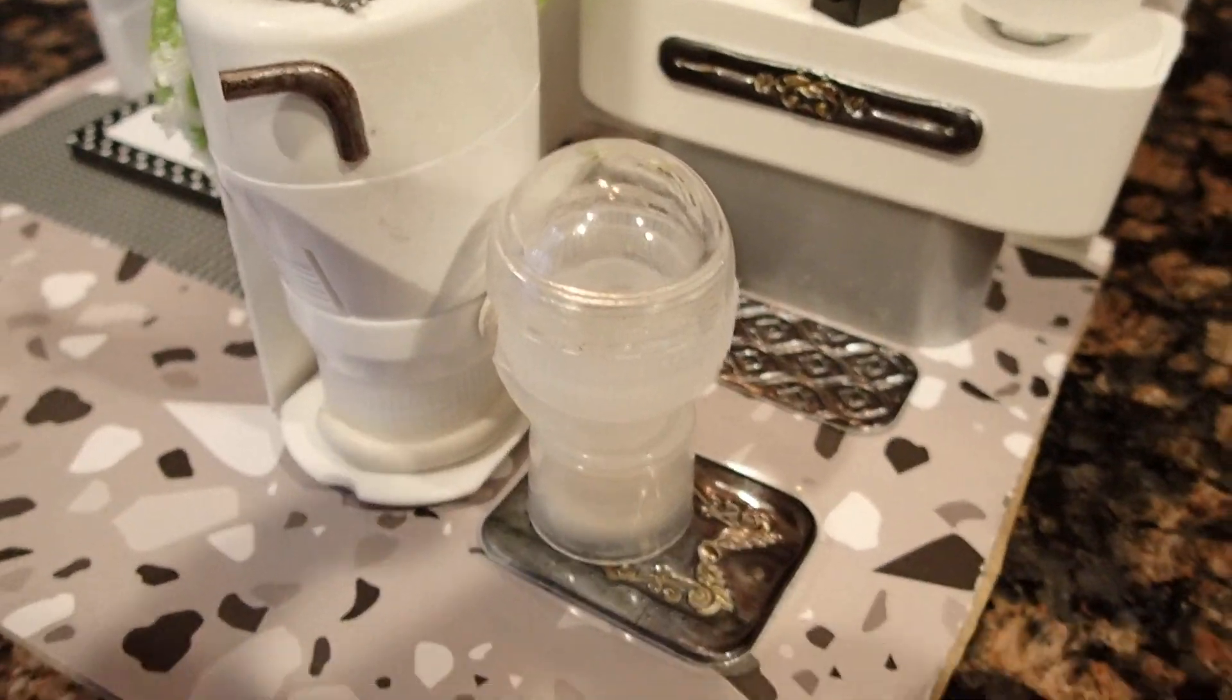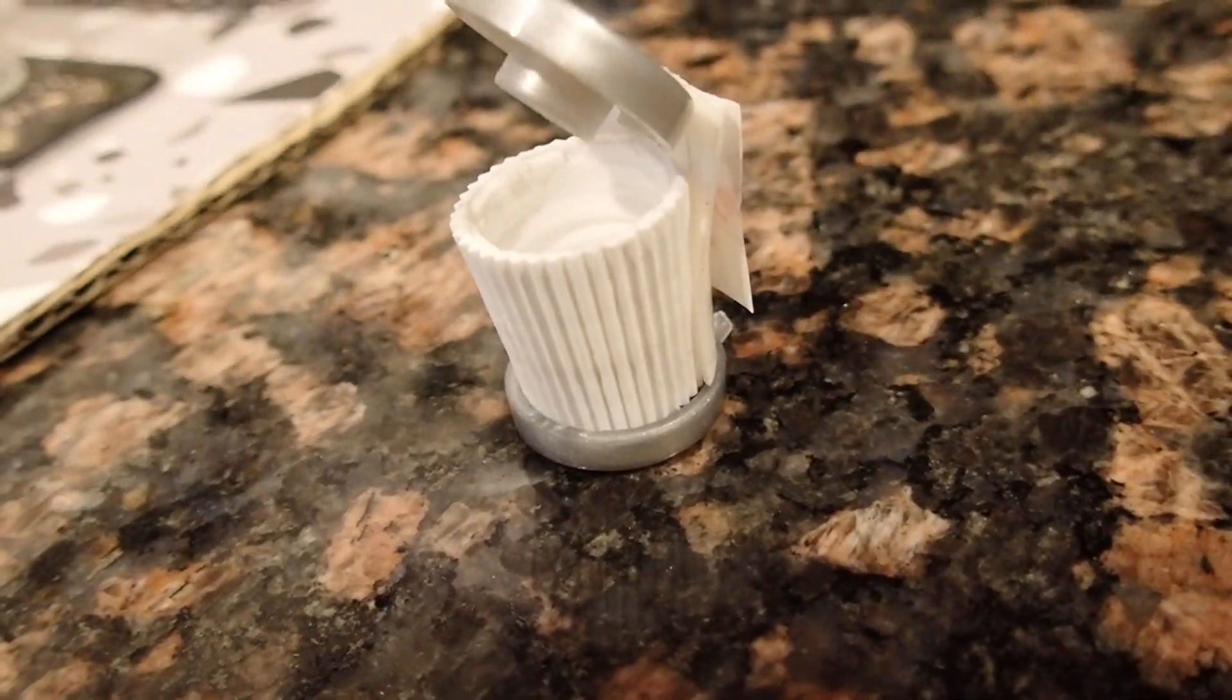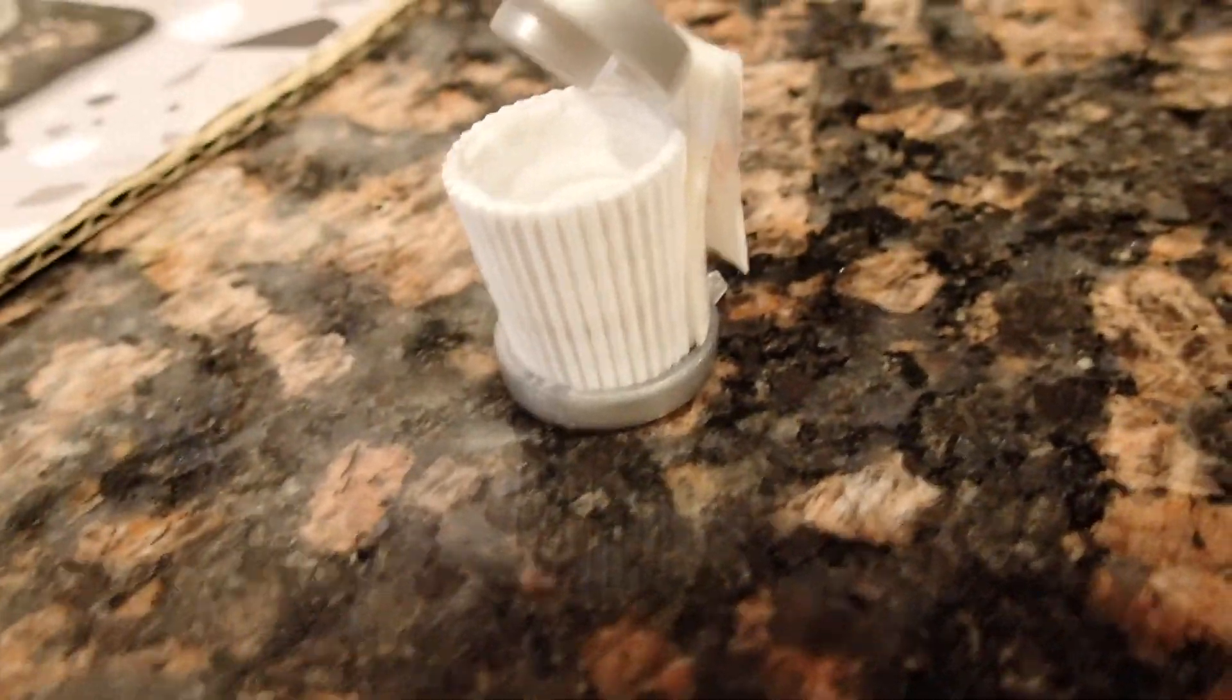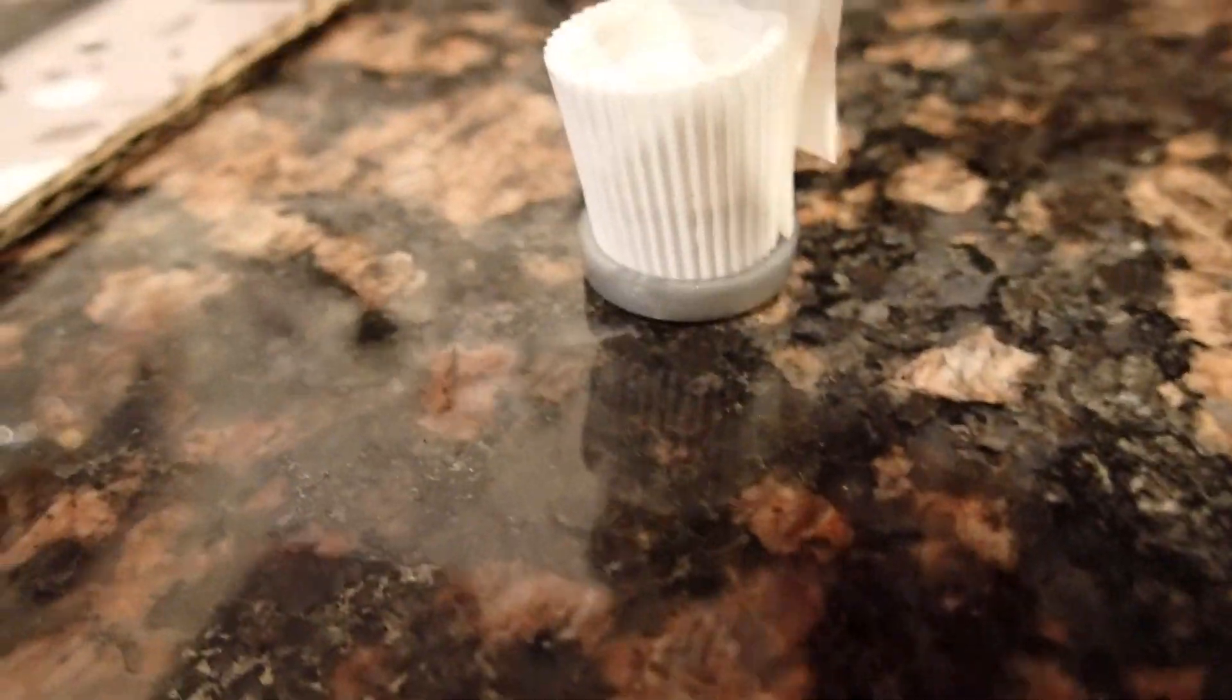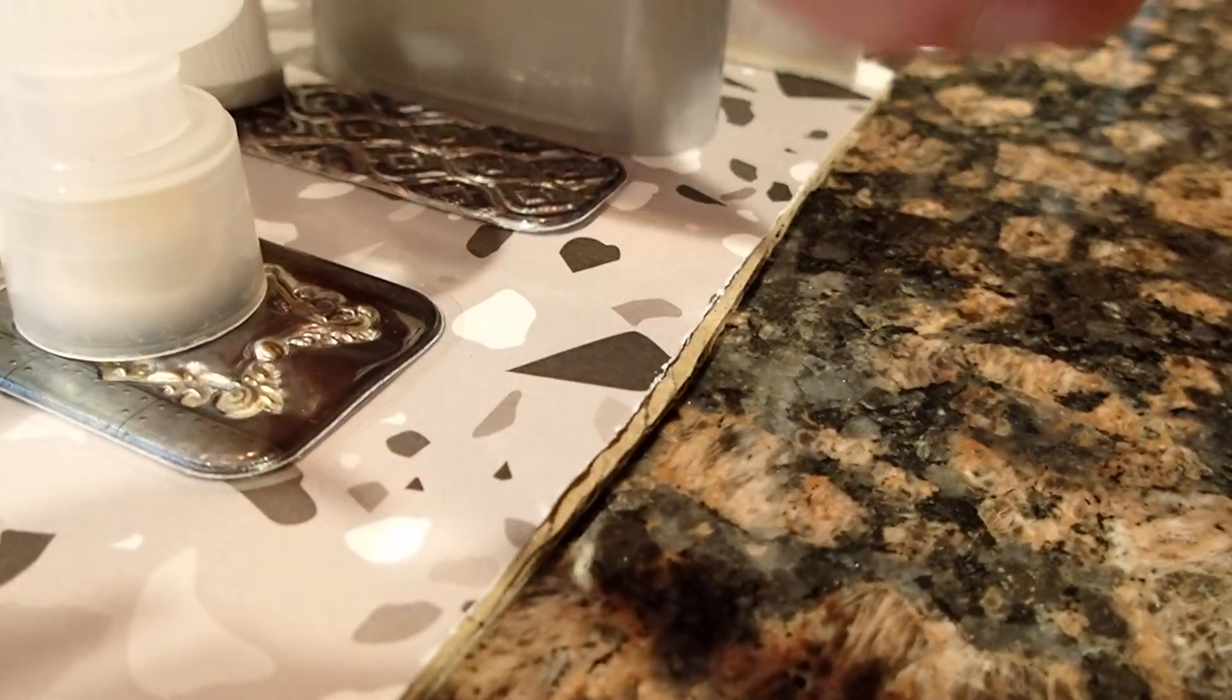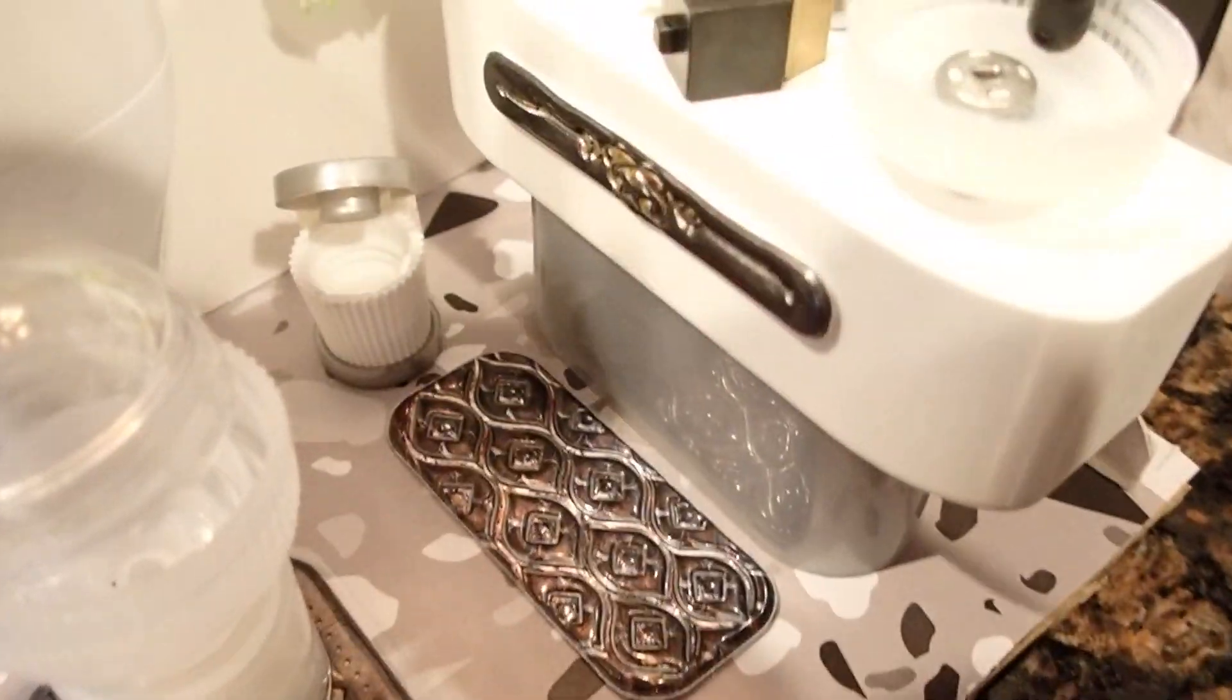And we have a little garbage can that I made. And it's a toothpaste lid cap with some other caps. I just collect little caps and then I make stuff out of it. So that's what I made. I made a little garbage can. It might be a little bit too small for this area, but it's okay.